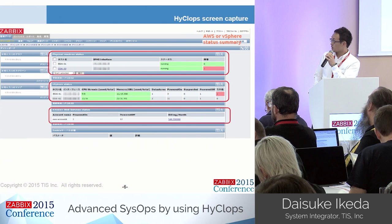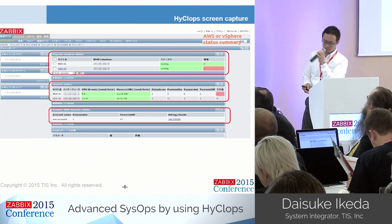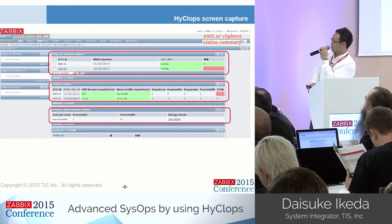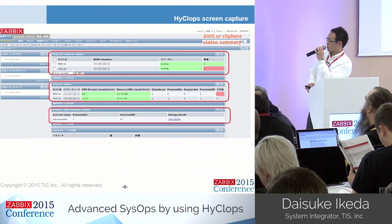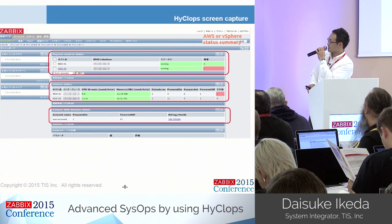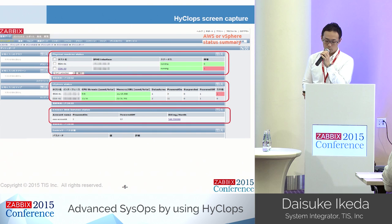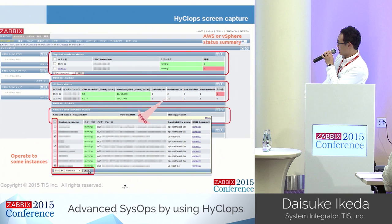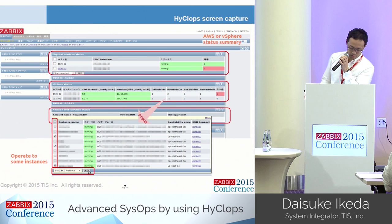This is the Hycrops customized Zabbix dashboard. You can see summary information for each environment — AWS and vSphere — such as the number of running instances and stopped instances. In the case of AWS, billing information is shown too. If you want to operate on some instances, all you have to do is turn on a checkbox and click the Execute button. It is very simple.